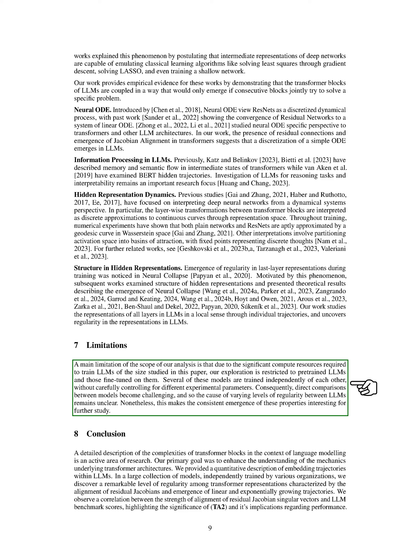In this section, we acknowledge a key limitation of our analysis. We are constrained by the substantial computational resources needed to train the large language models, LLMs, examined in this study. Therefore, our investigation is confined to pre-trained LLMs and those fine-tuned on them. Many of these models undergo training independently, with no meticulous control over different experimental factors. As a result, making direct comparisons between the models proves to be difficult, leading to uncertainty about the reasons behind the varying degrees of regularity observed among LLMs. Nevertheless, the consistent emergence of these characteristics presents an intriguing opportunity for further research.